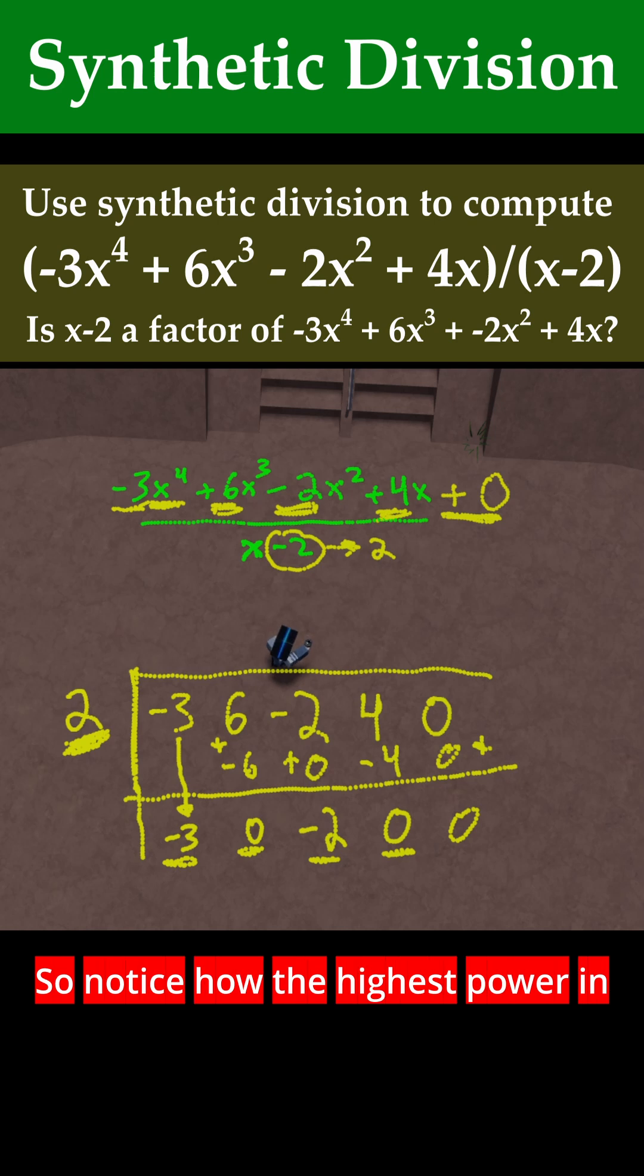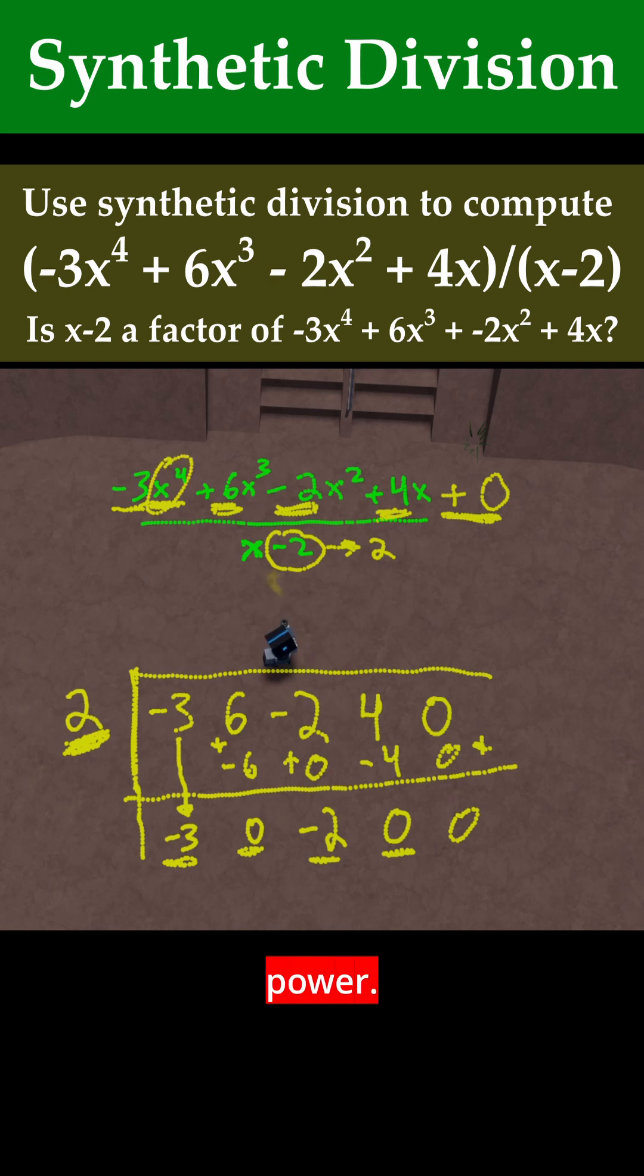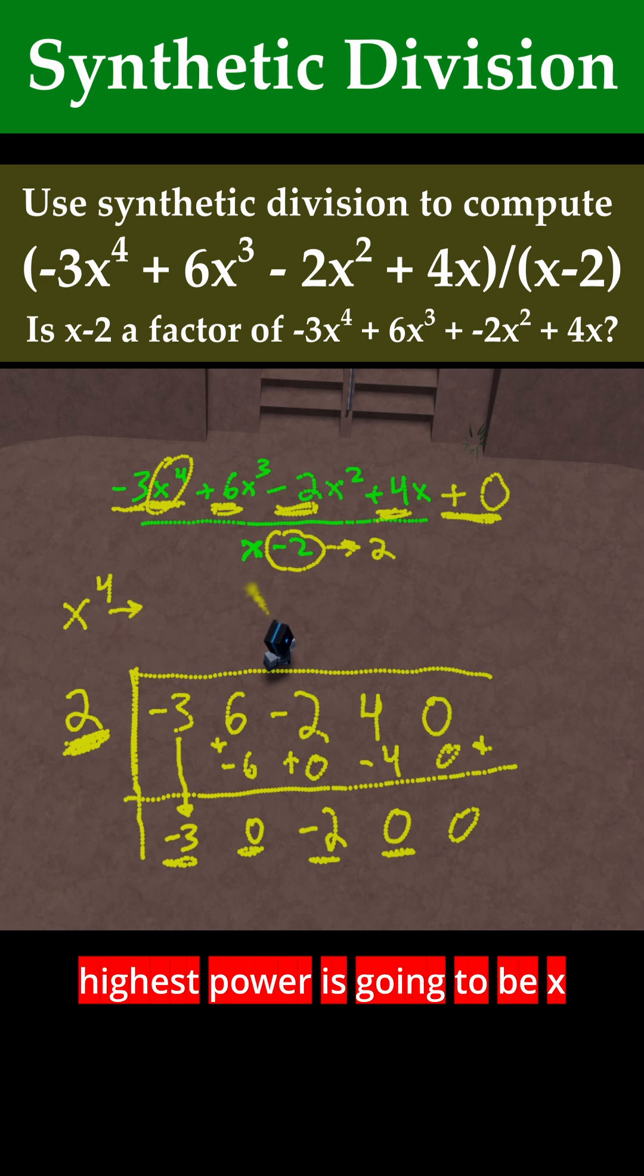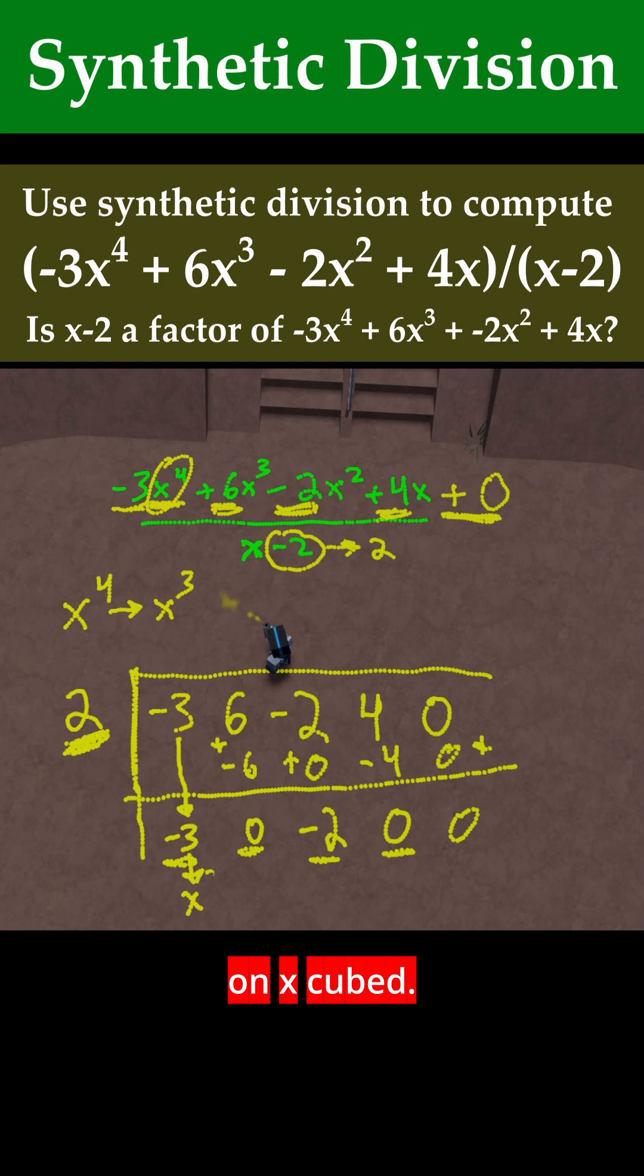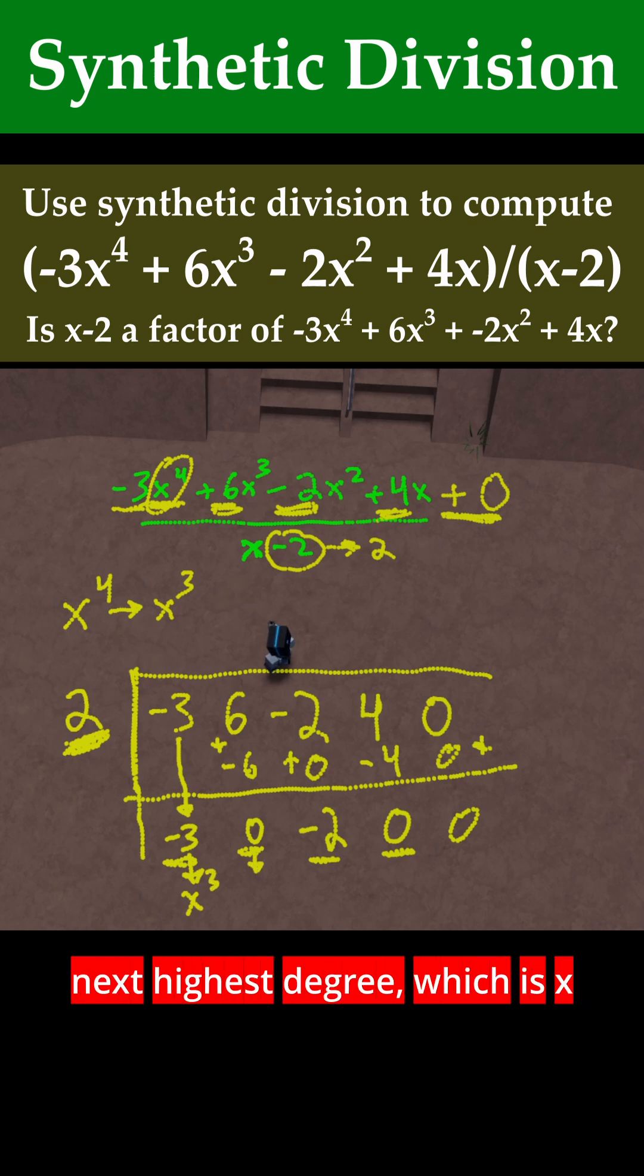Notice how the highest power in the numerator was x^4. Therefore, in our answer, the highest power is going to be x^3. So we start with x^3. This -3 is the coefficient on x^3. The 0 is the coefficient on the next highest degree, which is x^2. And you just keep going on like this.